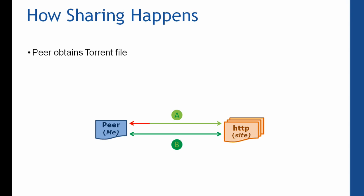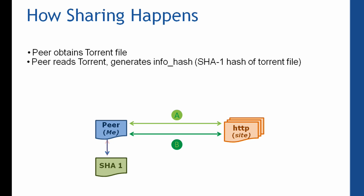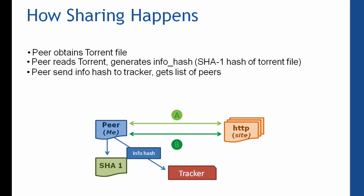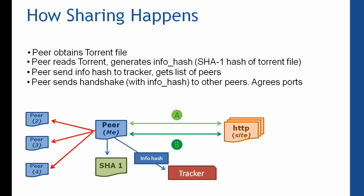Here's how the sharing process works. First we obtain the torrent file, which we saw is downloaded from an HTTP site. The client reads that torrent file and generates an info hash — specifically the SHA1 hash of the torrent file. That hash is sent to the tracker and we get a list of peers who have the file available for download. We connect to those peers, performing handshakes and agreeing on random port numbers. Then we start exchanging data — as I saw in my client earlier, about 136 kilobytes per second was coming in, and on my DSL connection that would ramp up to around 300–350 kilobytes per second inbound traffic, and I also share information back out.